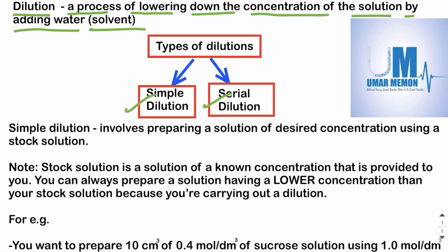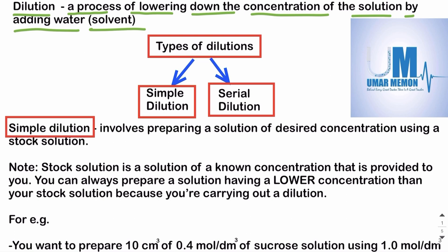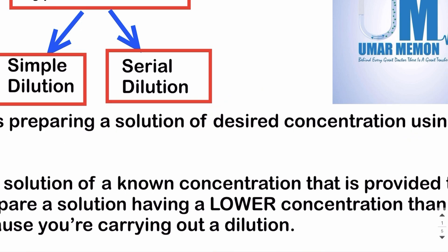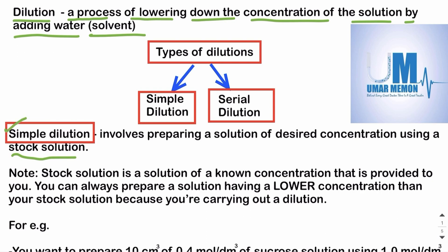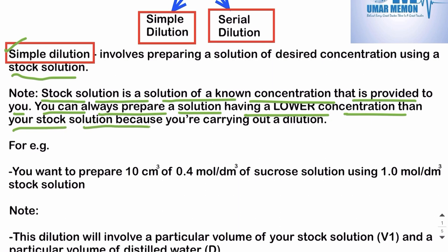Simple dilution involves preparing a solution of desired concentration using a stock solution. Whenever you want to prepare a solution of your desired concentration using a stock solution, you carry out simple dilution. You can always prepare a solution having a lower concentration than your stock solution because dilution reduces the concentration by adding more solvent or water.